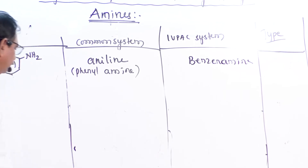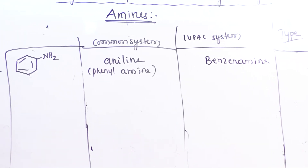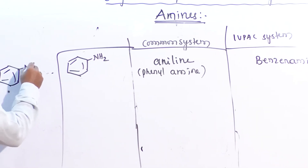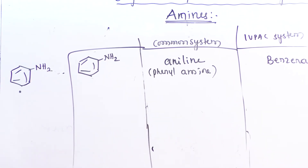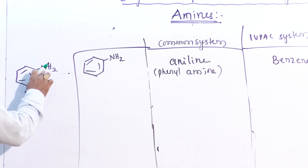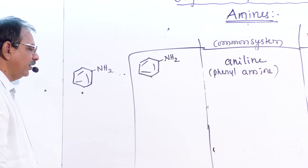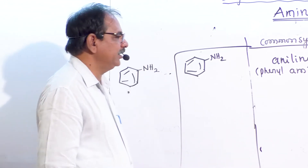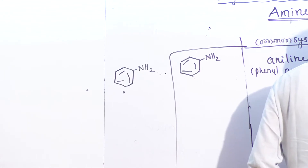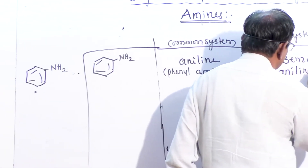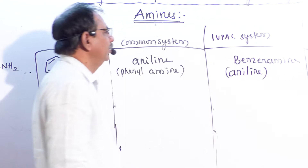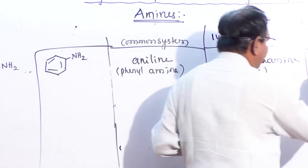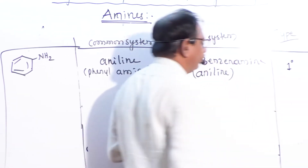Aniline is a primary aromatic amine because only one hydrogen atom of ammonia is replaced by one aryl group. The benzene ring, which has six hydrogen atoms, has one replaced by the NH2 group to form benzenamine.